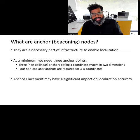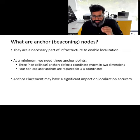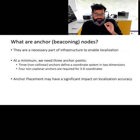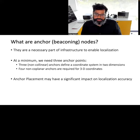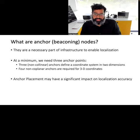How many anchor or beacon nodes are required? To localize in two dimensions, we need at least three anchor nodes. To localize in three dimensions, we need at least four anchor nodes. The location and distribution of these anchor nodes can very greatly affect the accuracy of the localization process.